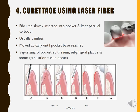Curettage by laser fiber is a frequently performed procedure. The fiber tip is inserted into the pocket at a long axis to the tooth surface up to the most apical region, then used to vaporize that region. Once done, calculus on the root surface is removed by scalers. The laser is then reintroduced to vaporize remaining pocket epithelium, subgingival plaque, or granulation tissue. The tissue is then readapted back to the tooth, and healing of the surface occurs.